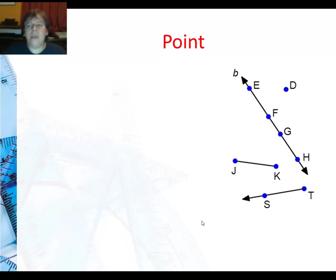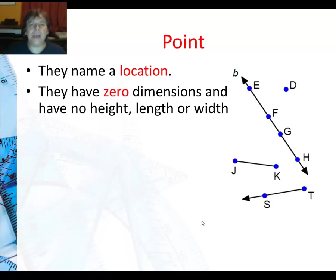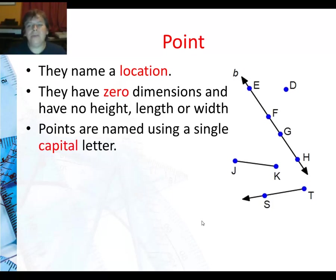So what is a point? A point is something that tells you where it is. It really names location. And they don't really have size. They have zero dimensions. They have no height, no length, and no width. Points are named using a single capital letter.